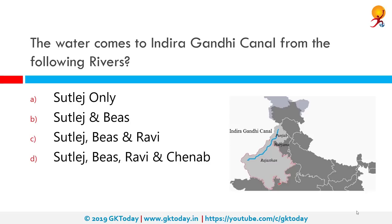The water for the Indira Gandhi Canal comes from which rivers? They come from the Sutlej and Beas. The Indira Gandhi Canal is the longest canal in India. It starts from the Harike Barrage at Harike, a few kilometers below the confluence of the Sutlej and Beas rivers in Punjab, and terminates in irrigation facilities in the Thar Desert in northwest Rajasthan.